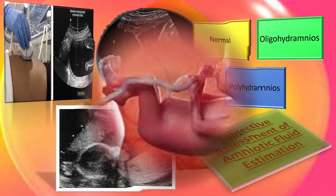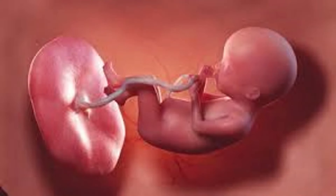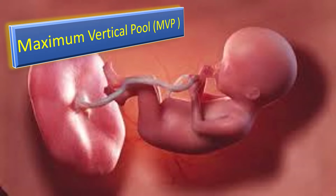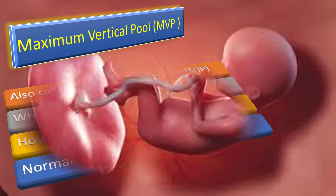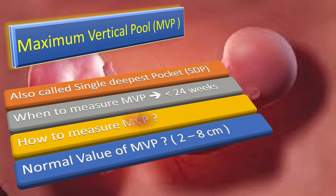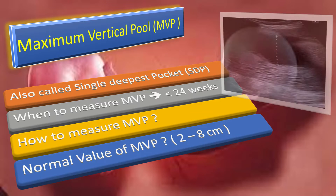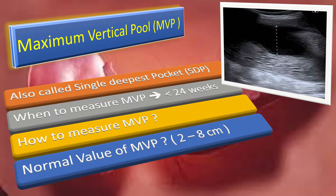Let us discuss the maximum vertical pool assessment. This is also called the single deepest pocket, or SDP. When to measure MVP: in both singleton and twin pregnancies, it is measured at less than 24 weeks of gestation. To measure MVP or the maximum vertical pool, we need to find the largest pocket of amniotic fluid free of cord and fetal parts.